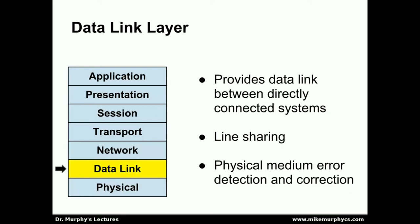Once we have a physical layer in place, we can move on to the data link layer, which provides a link between directly connected systems — for example, two systems cabled together with a piece of wire or fiber-optically interconnected. The data link layer provides connectivity at a higher level than the physical layer, allowing a line to be shared between two or more systems and arbitrating who can send at any given time. It also performs some physical medium error detection and correction, whereas the physical layer just tries to get the bits from one end to the other.